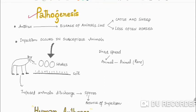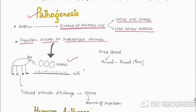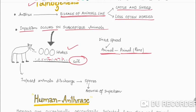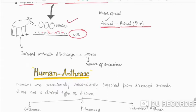Anthrax is primarily a disease of animals — a zoonotic disease involving cattle and sheep, and less often horses. Infection in susceptible animals occurs by inhalation of spores found in soil. Direct spread from animal to animal is rare. Infected animals may discharge spores, which become a source of infection.